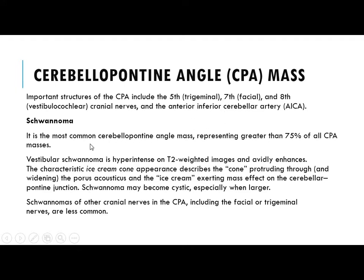Starting with pathology, we begin with schwannoma. Schwannoma is the most common cerebellopontine angle mass, representing greater than 75% of all CP angle masses. It is hyper-intense on T2-weighted imaging and intensely enhancing. There is a characteristic ice cream cone appearance, describing the cone protruding through and widening the porus acousticus, and the ice cream exerting mass effect on the CP junction. Schwannoma may become cystic if large.